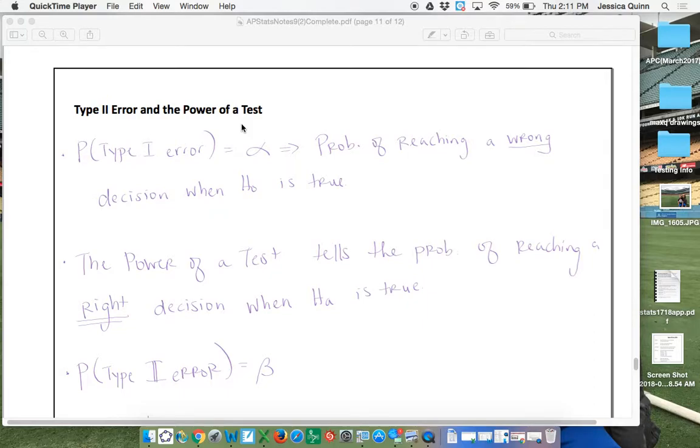Section 9.2 is about type 2 error and the power of a test. So you'll recall from 9.1 that the probability of making a type 1 error, which is basically the idea of sending an innocent person to jail,